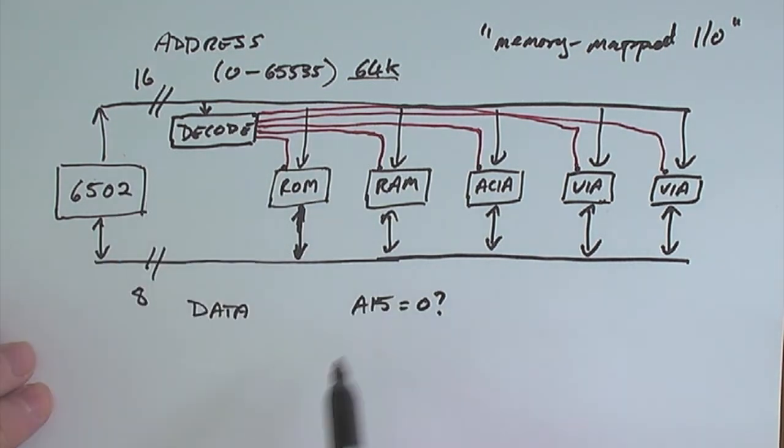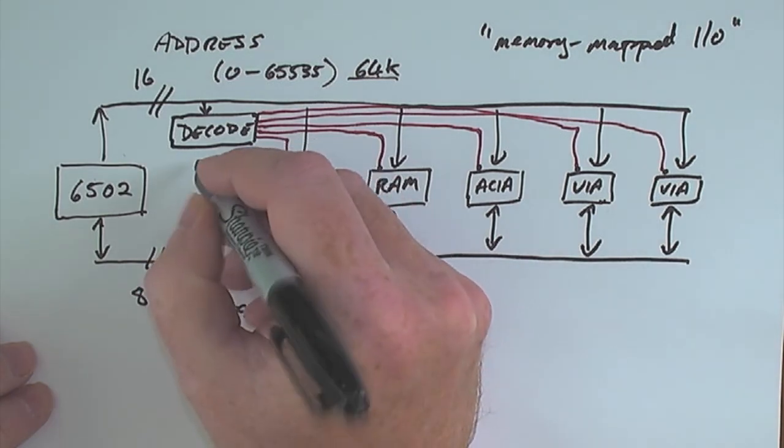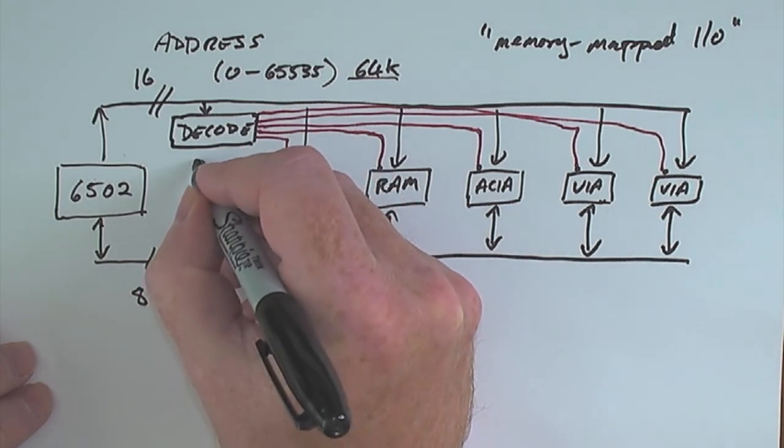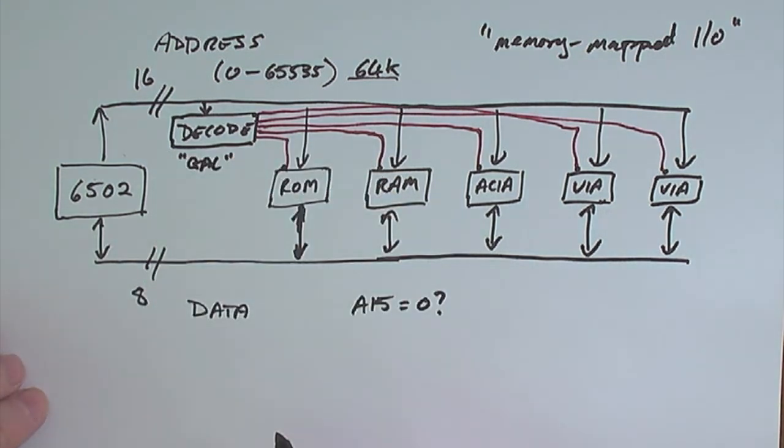But these days it's actually in what's called generic array logic. It's a programmable device that in a single chip will have a more complicated set of rules that basically tell it when these different chips should be turned on.